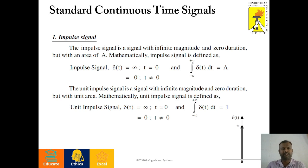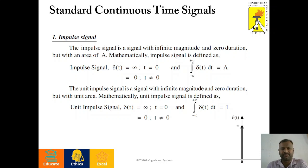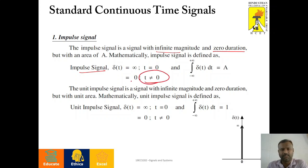To start with, the first standard signal is the impulse signal. The impulse signal is a signal with infinite magnitude and zero duration. It is completely a theoretical signal because it has infinite magnitude with zero time duration. This impulse signal is defined as delta of t equals to infinite only at t equals to zero. When t is not equal to zero, the amplitude goes down to zero.